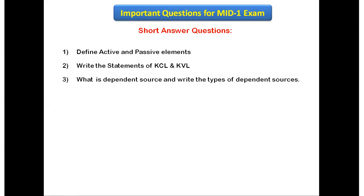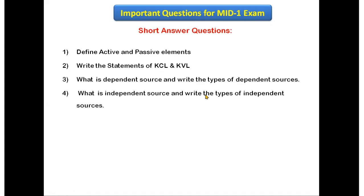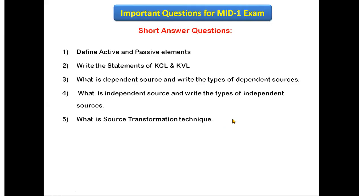You have to write first what is a dependent source and then what are the types of dependent sources. The next question is: what is an independent source and what are the different types of independent sources? The next question is: what is the source transformation technique? Converting one source to another source is called source transformation technique; explain it with neat diagrams.